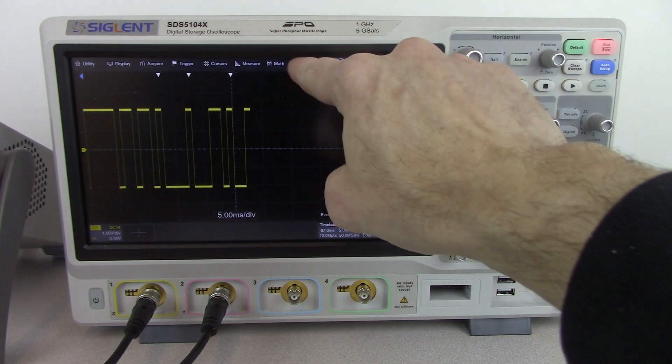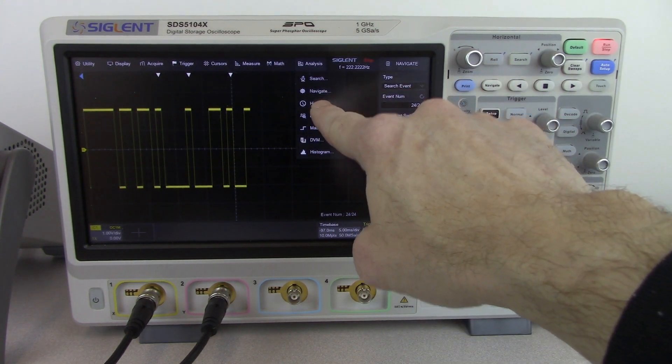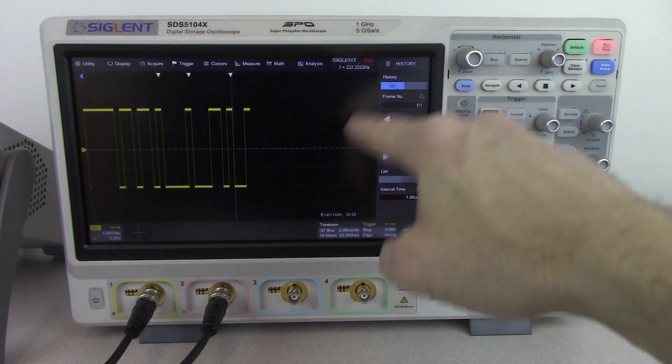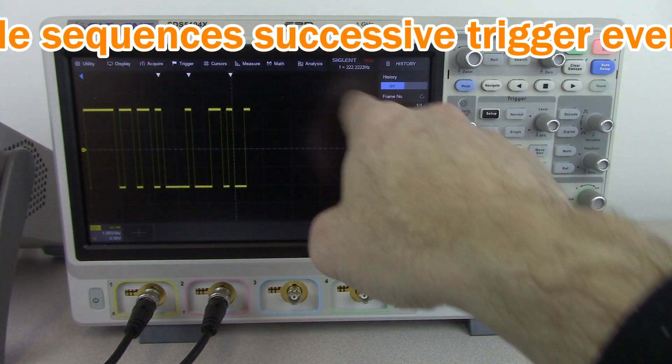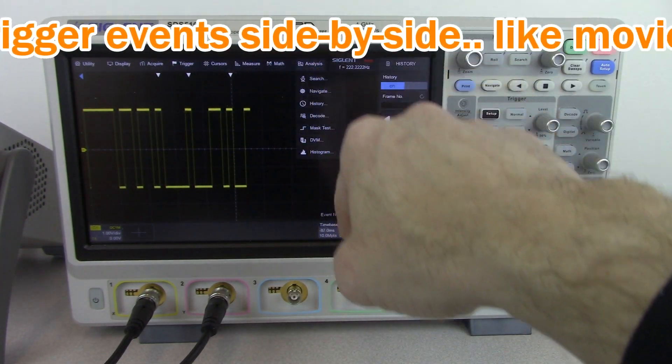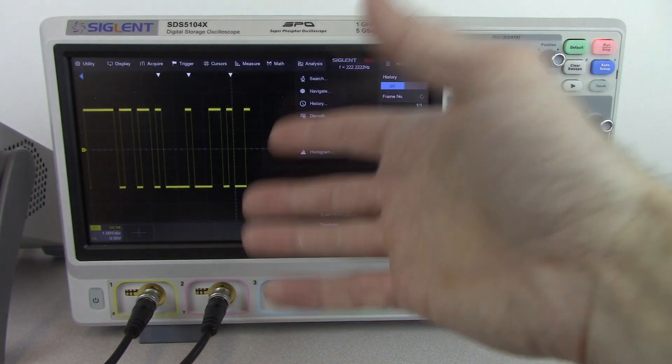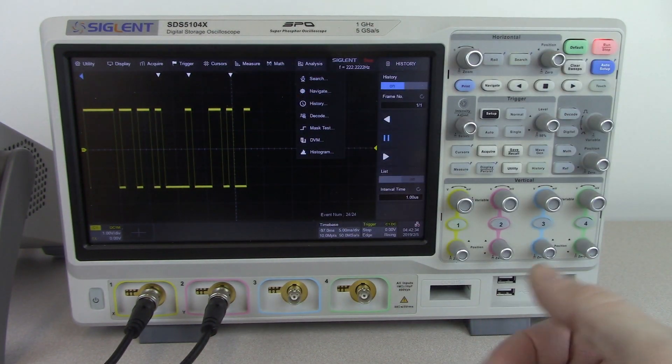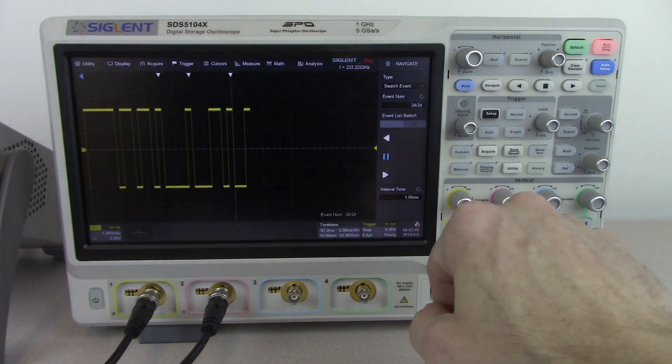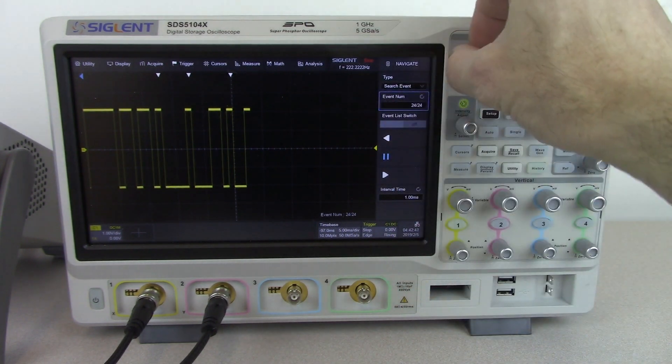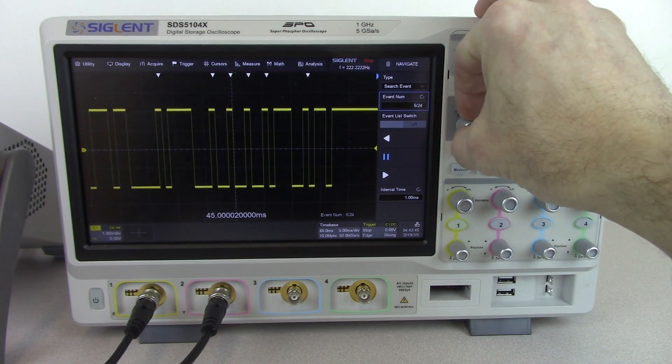We also have, similar to the search event, a history function. The history function is going to take successive frames of data and show those individual frames very much like a movie. We also have the ability to perform mask tests. We can set up a mask on the display and it can give us a pass or fail. We can also take a look at the navigate and pop through different events and be able to search through each of those.